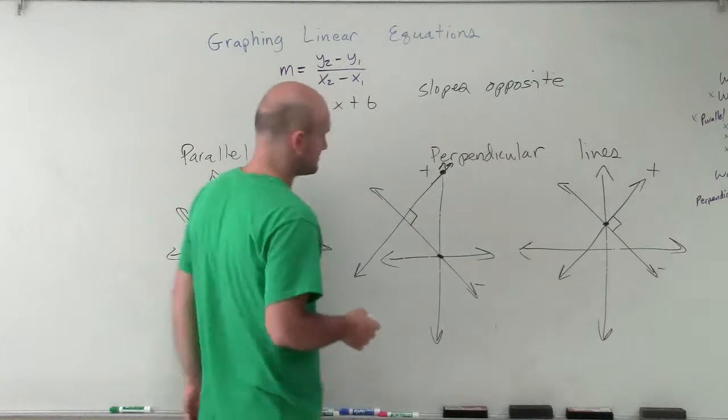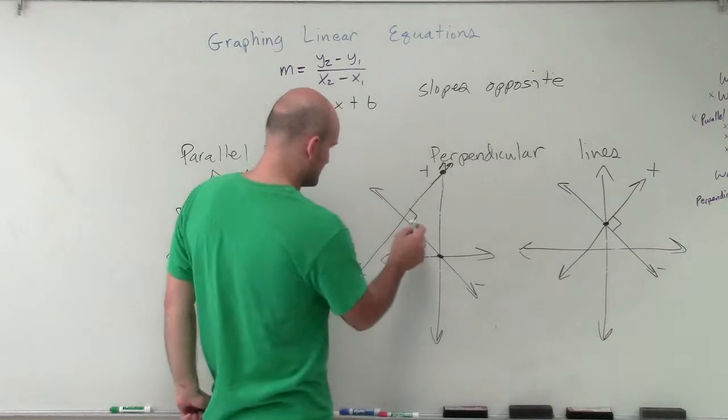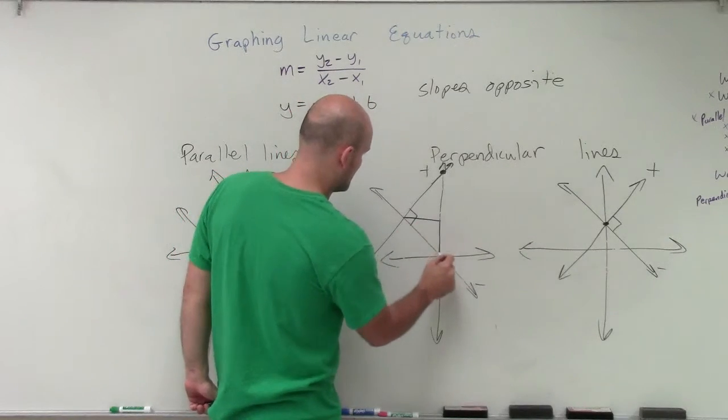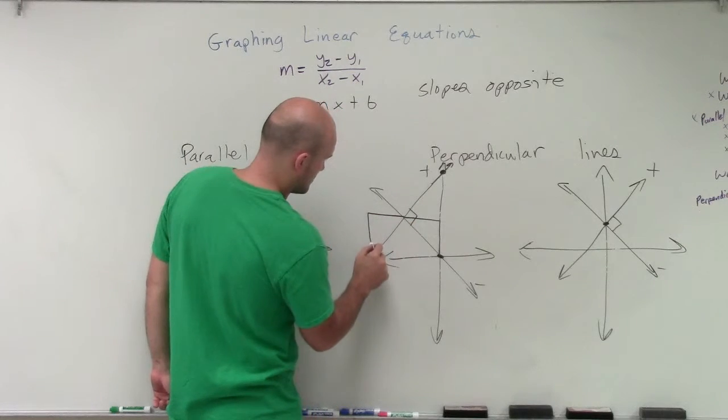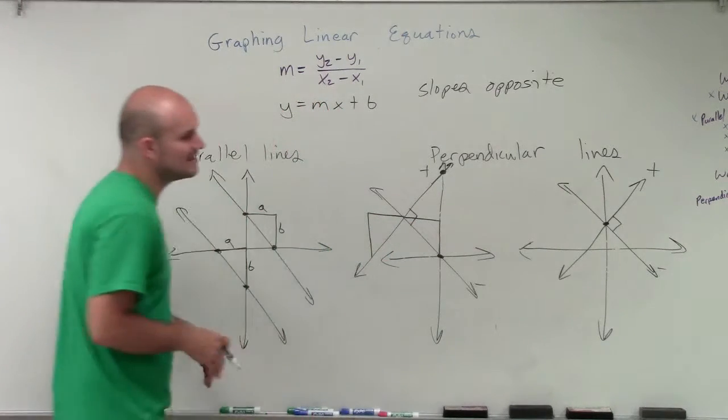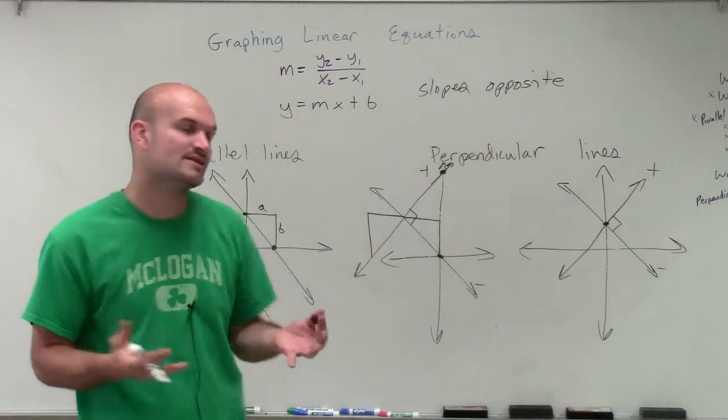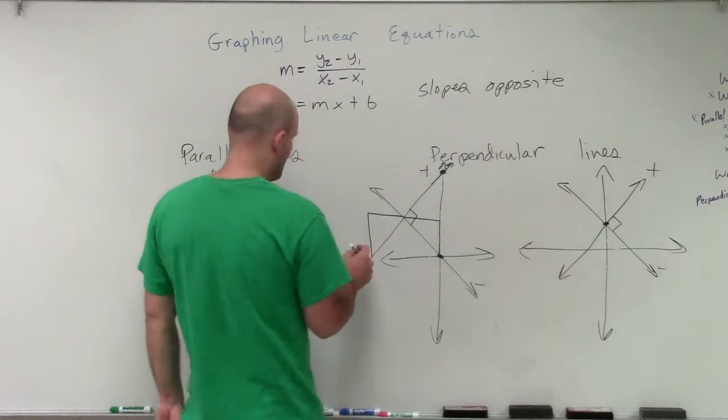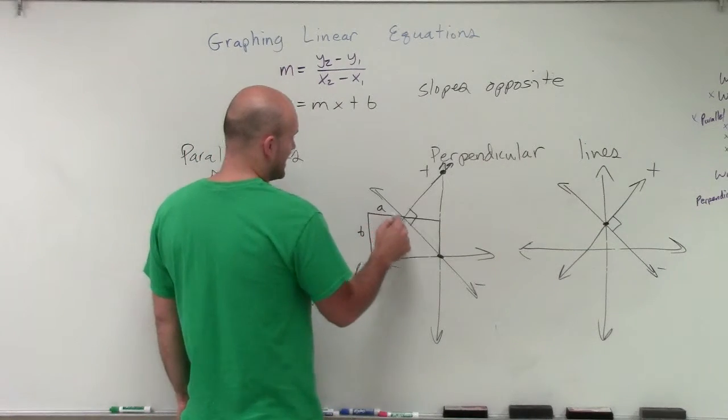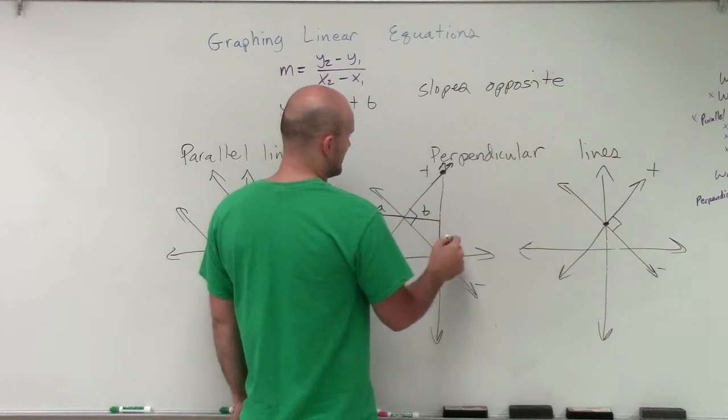The next thing we need to look at is, their slopes are going to be what we call reciprocals of each other. So if I call this one b over a, then this one is going to be a over b.